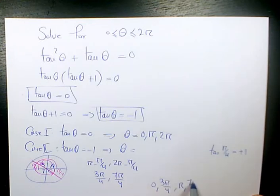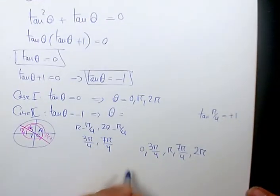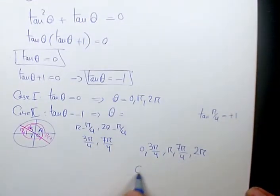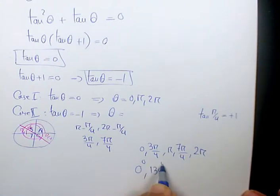pi, 7 pi over 4 and 2 pi. These are going to be the five answers. In terms of degrees it's going to be 0 degrees, 135 degrees, 180 degrees, 315 degrees and 360 degrees. So